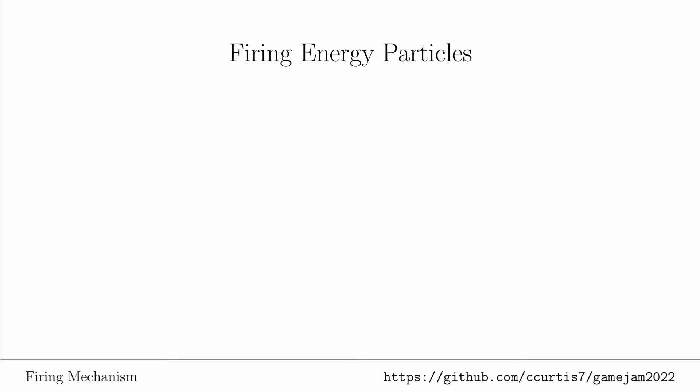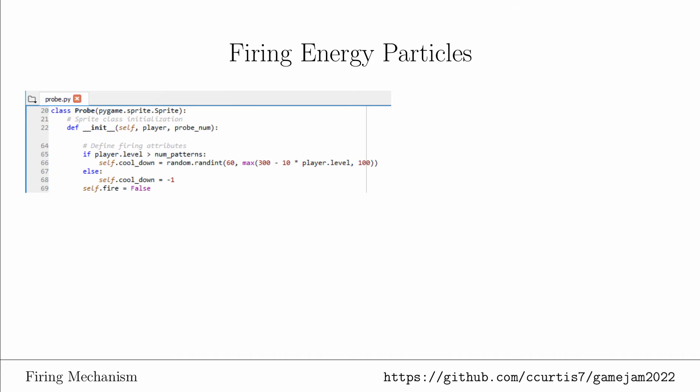We now need to create the firing mechanism, which will live inside of the probes. For the first time through the patterns, we don't want the probes to fire, so we will set the cooldown timer to negative 1. This is an easy way to prevent it from firing because the timer will get more negative and never reach 0.